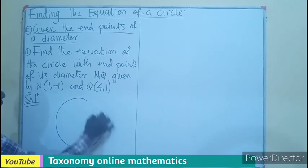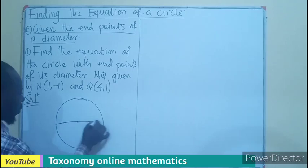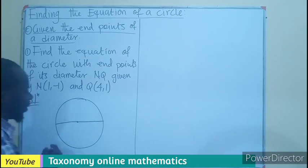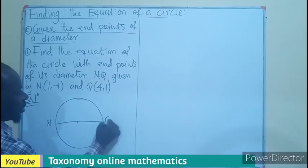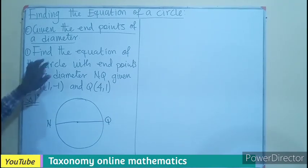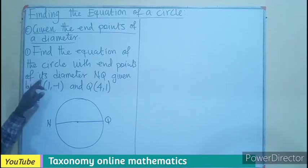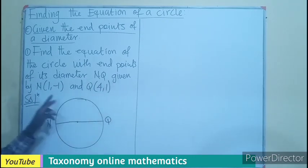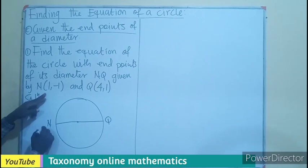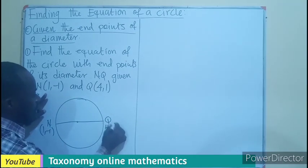We have our circle with center here. So find the equation of a circle with the endpoints of the diameter given by two points: this is going to be (1, -1) and this is going to be (4, 1).